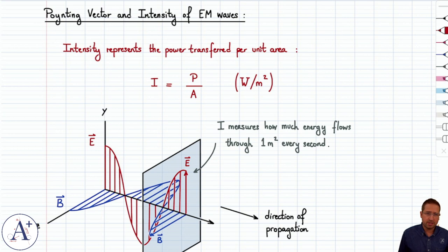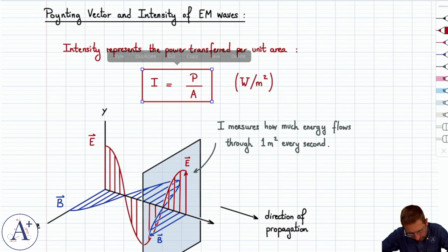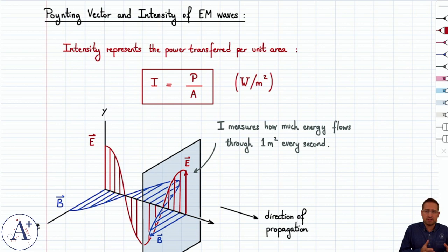We've defined the notion of intensity before in this class, and we said that intensity represents the power transferred per unit area. In other words, I is equal to P divided by A, and is expressed in watts per meter squared. This is a general quantity, not specific to EM waves. As long as you have a certain amount of power transferred per unit area, you can define an intensity.